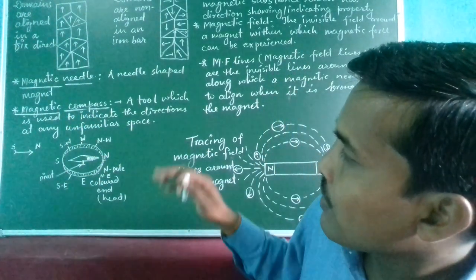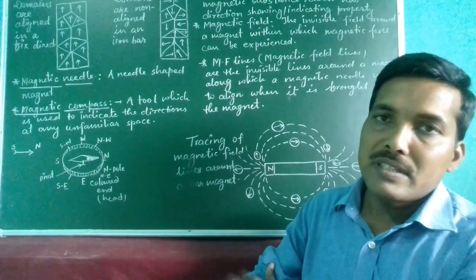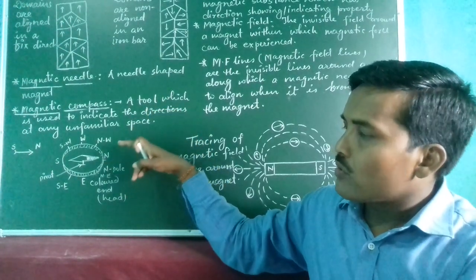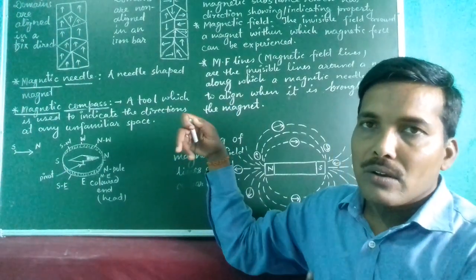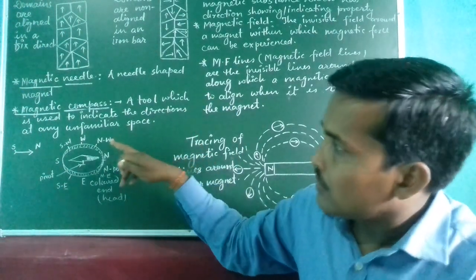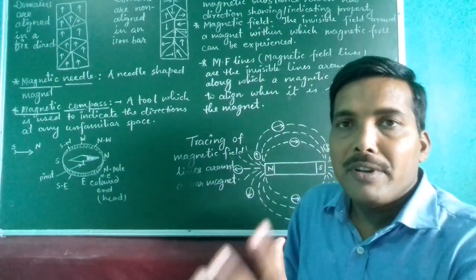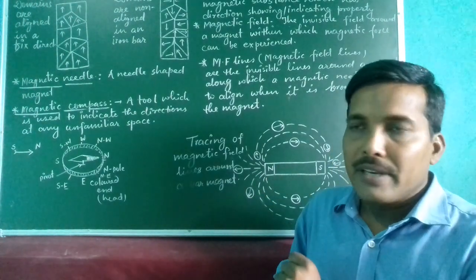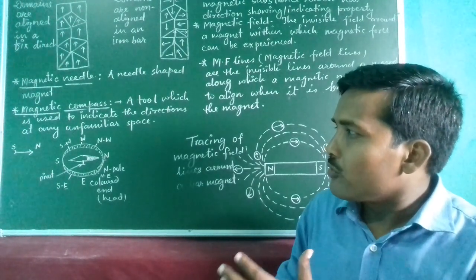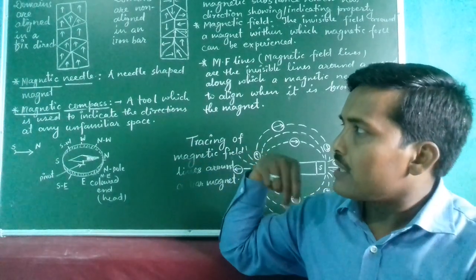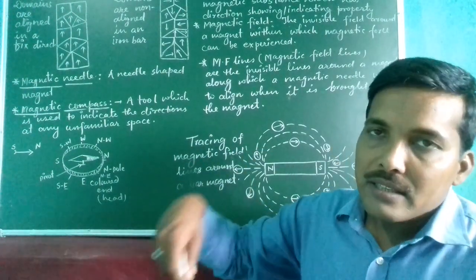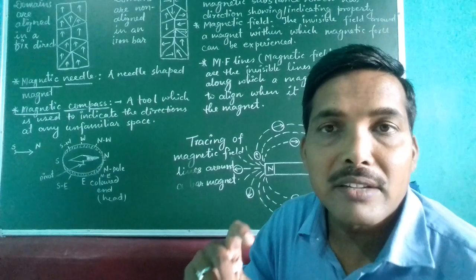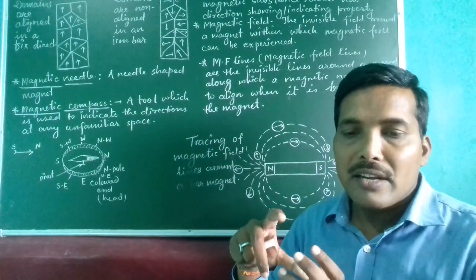Magnetic compass: since ancient times, sailors and travellers have used the magnetic compass to find out the location and directions of a particular place in any unfamiliar space, like a beach or desert, where finding one's way could be complicated. The magnetic compass is very helpful to trace such directions.